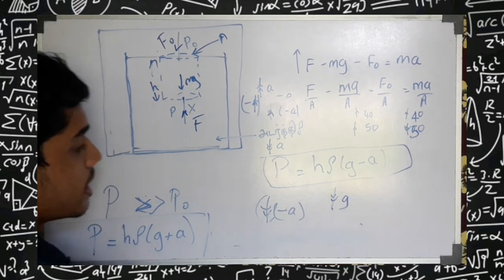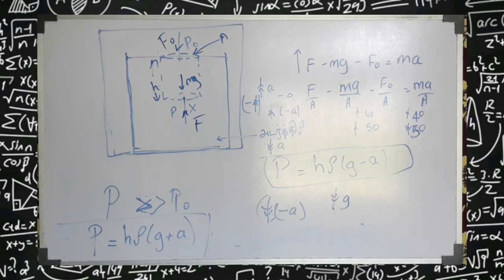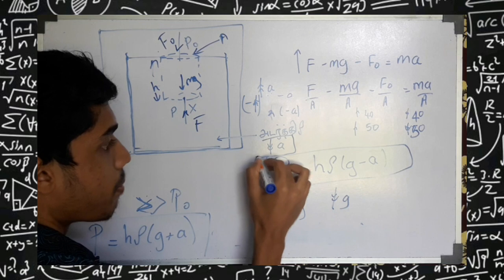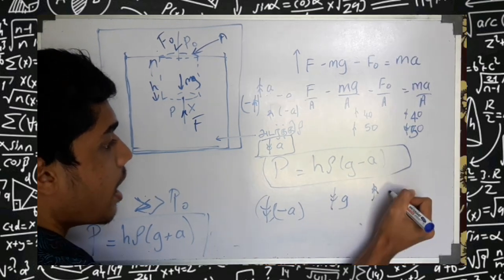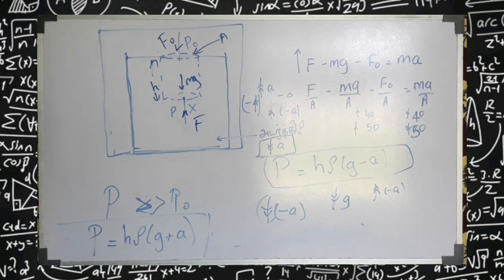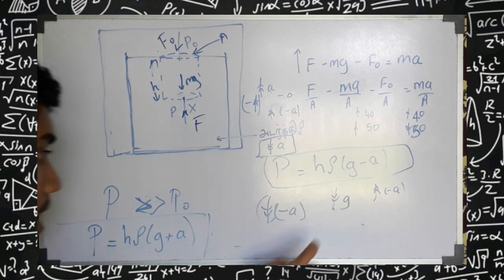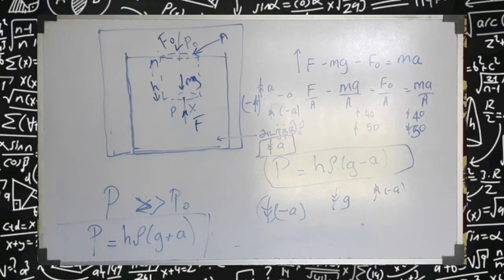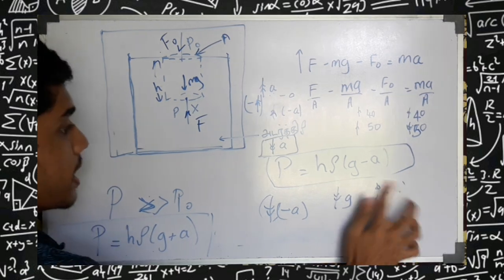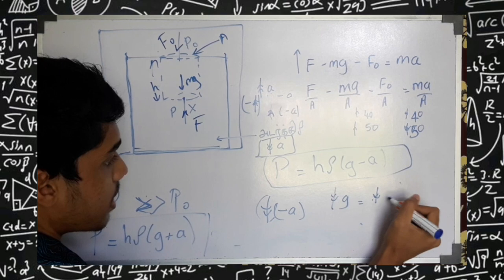Cool noki are married. If you want to see where you are — cool noki are married. This is the same. This is where you are. Cool noki are married. Now, we can say: cool noki are married. So if you want to see the same — cool noki are married. Now, so if we look at g, we will see g in a particular way. That's because we will see g in a particular way.